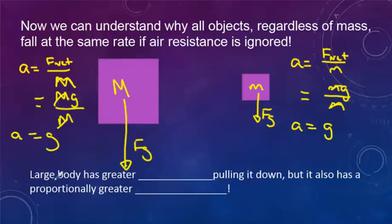The large body has a greater force pulling it down, but it also has proportionally a greater mass. So it has more force but more mass. This has less force but less mass to accelerate. So they both are accelerating at the same value. And this is true for all objects that are in free fall.